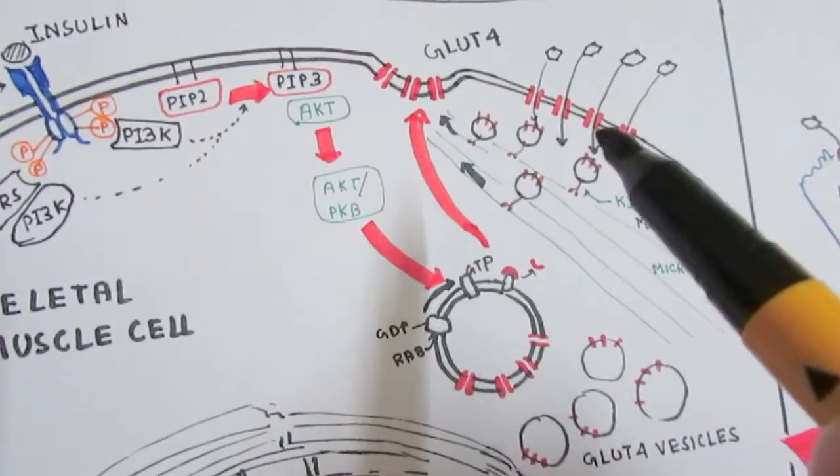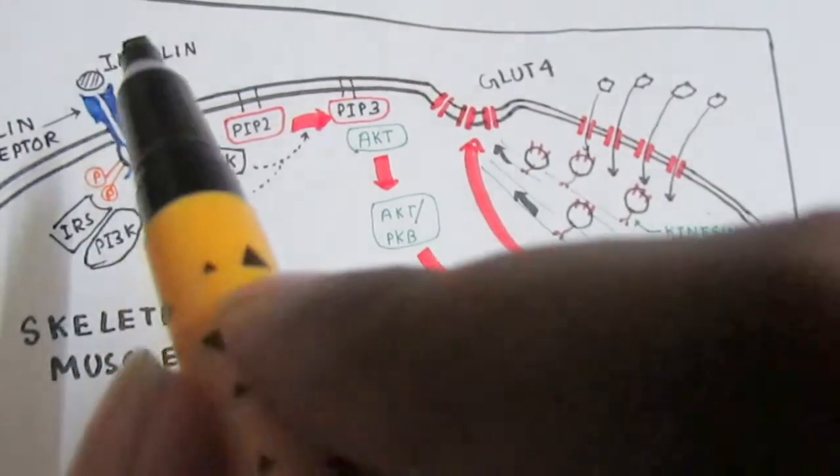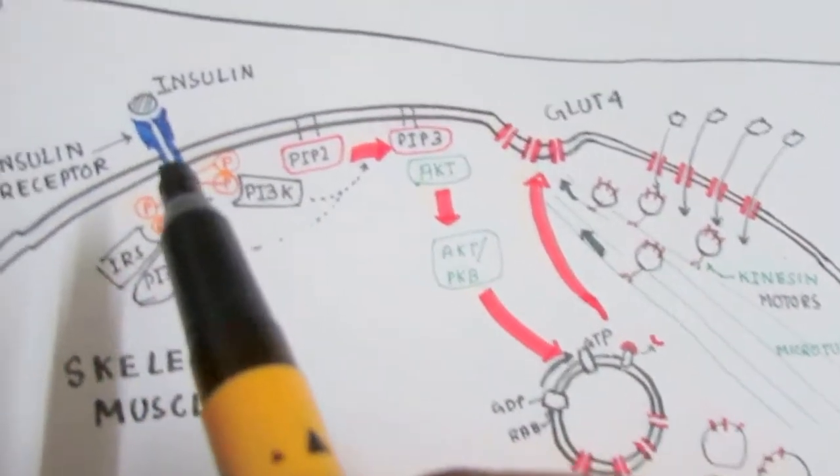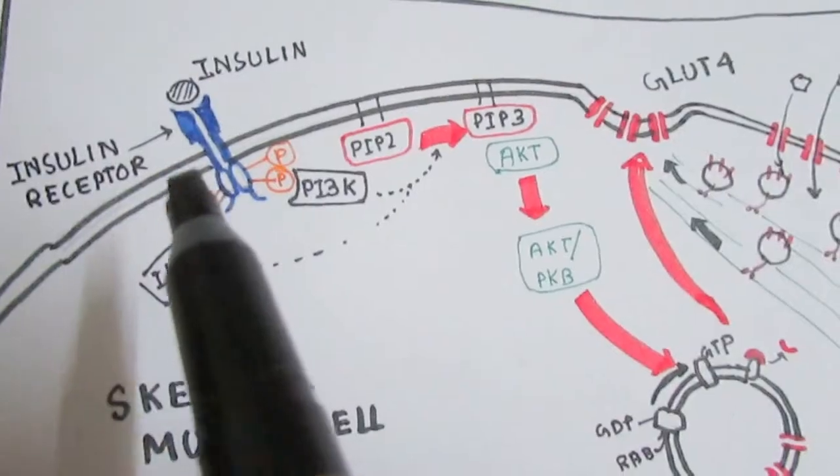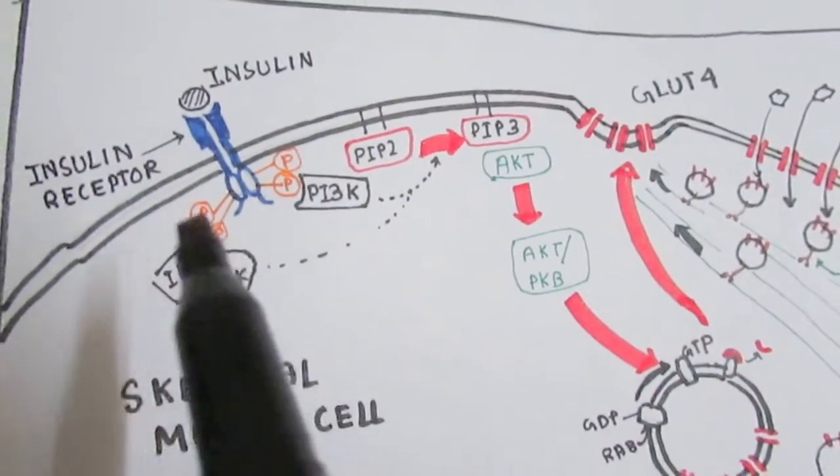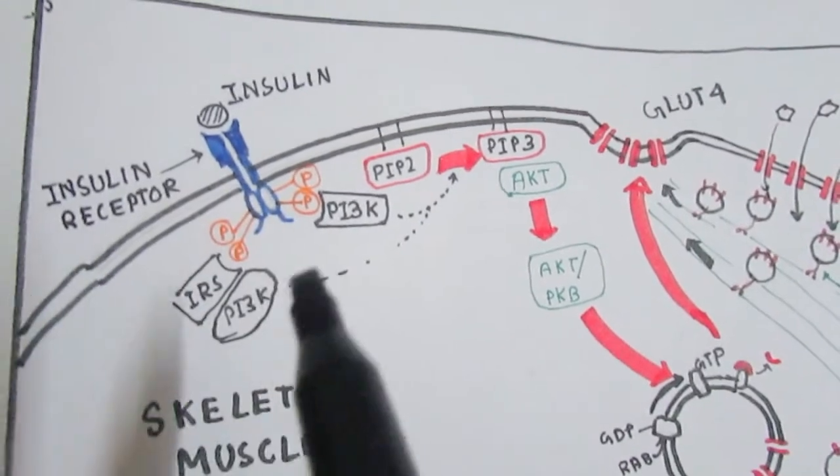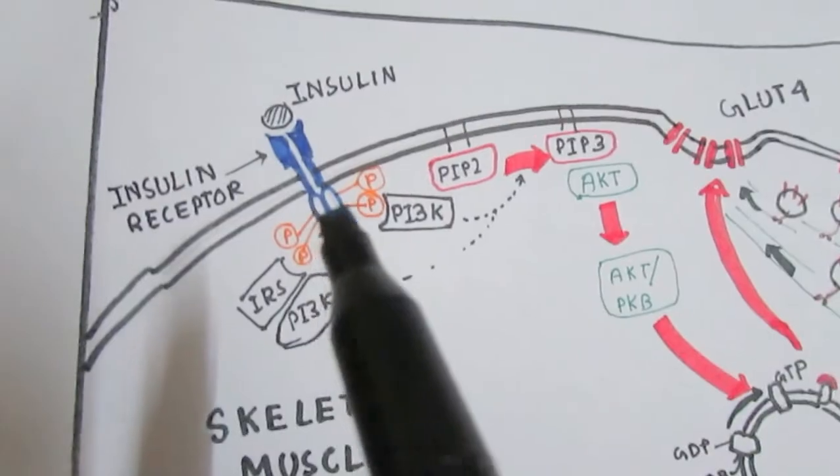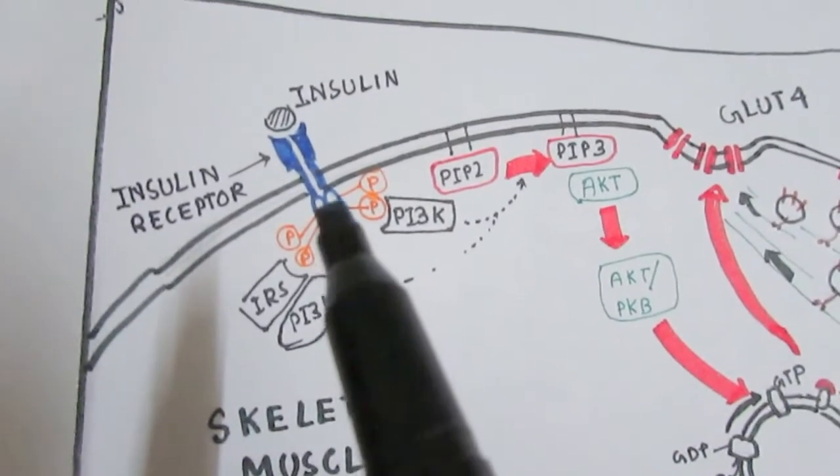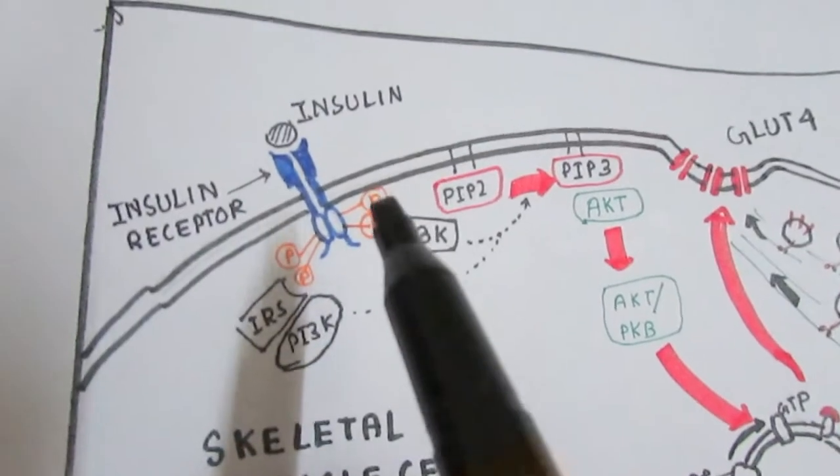Insulin binds to the RTK, triggering a conformational change that leads to tyrosine kinase activity of its cytosolic domain. The tyrosine residues get phosphorylated, as you can see here.